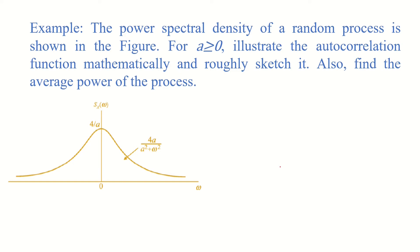In this example we are asked to find the power spectral density of a random process which is shown over here. We have a variable a which is positive, that is, it is greater than or equal to zero.